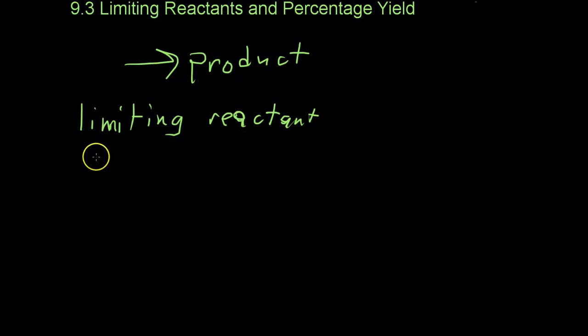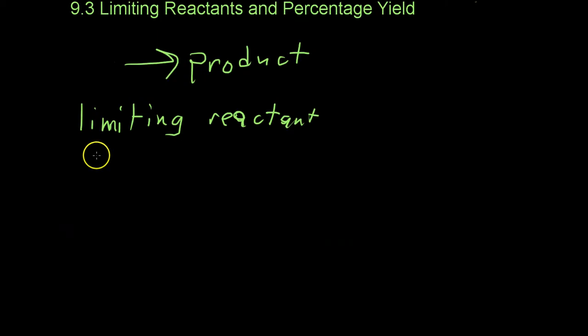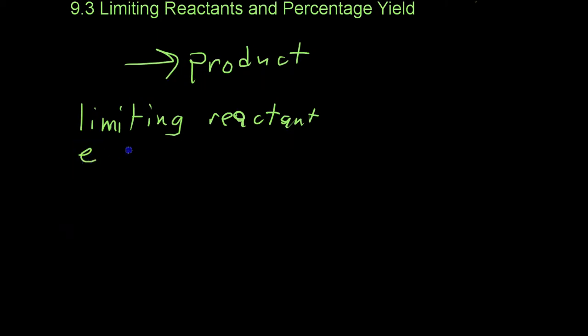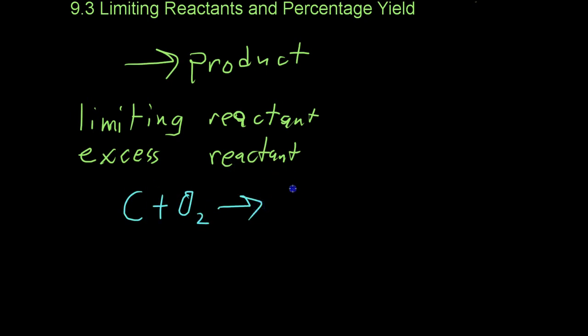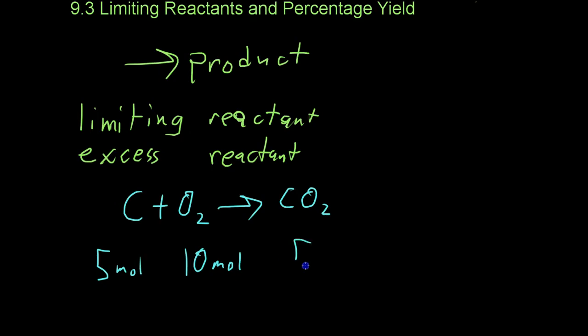The other reactant that has a bunch left over is known as the excess reactant. For example, if we were to burn carbon in the presence of oxygen to form CO2, if you started with 5 moles of carbon and 10 moles of oxygen, you wouldn't get somewhere between 5 and 10 moles of CO2. You would only get 5 moles of CO2 because at some point you would run out of carbon to burn.